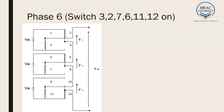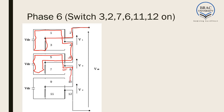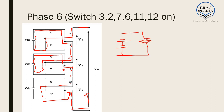In phase 6, same as phase 5, with the only difference being that switch number 8 is open and switch number 6 is closed. The current goes through the negative of the first VDC, then through the negative of the second VDC, and then directly through the output without going through the third VDC. So the equivalent circuit gives V output equal to minus 2VDC.